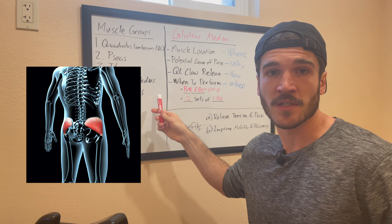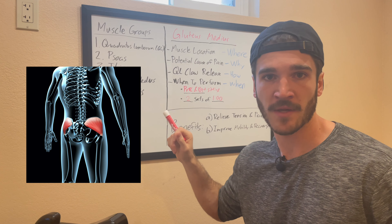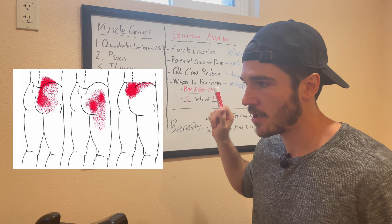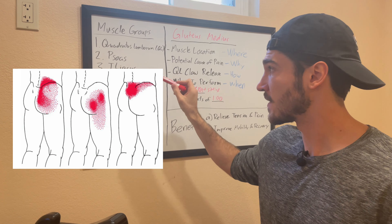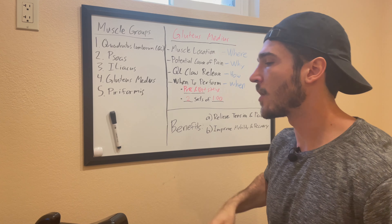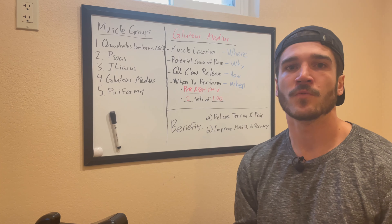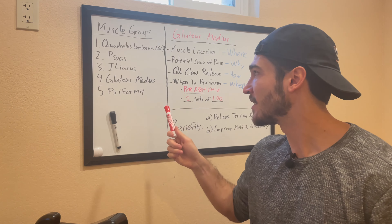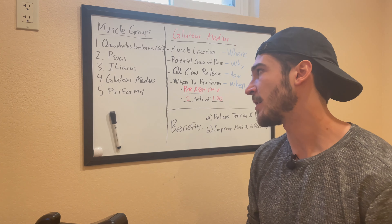Next we have the gluteus medius, and in my opinion this is the least understood of the lower back pain culprits. This is an upper glute muscle with one of the worst pain patterns and contributes to more pain than maybe any other muscle — from overuse and from sitting. Like the QL, this is more of a lifting muscle. If you're playing basketball for the first time in years, your gluteus medius is not conditioned for that, and there's a good chance it locks up and gets tight.